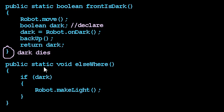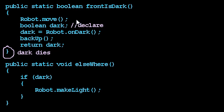Sure enough, I'm not able to use dark in this other method. If I go to compile this code, Java's going to say: what do you mean dark? I've never heard of dark. It's going to say unknown symbol dark, or symbol not found: variable dark, something like that. It doesn't know where to look for dark except in this method. Since it's not in this method, it must not exist.